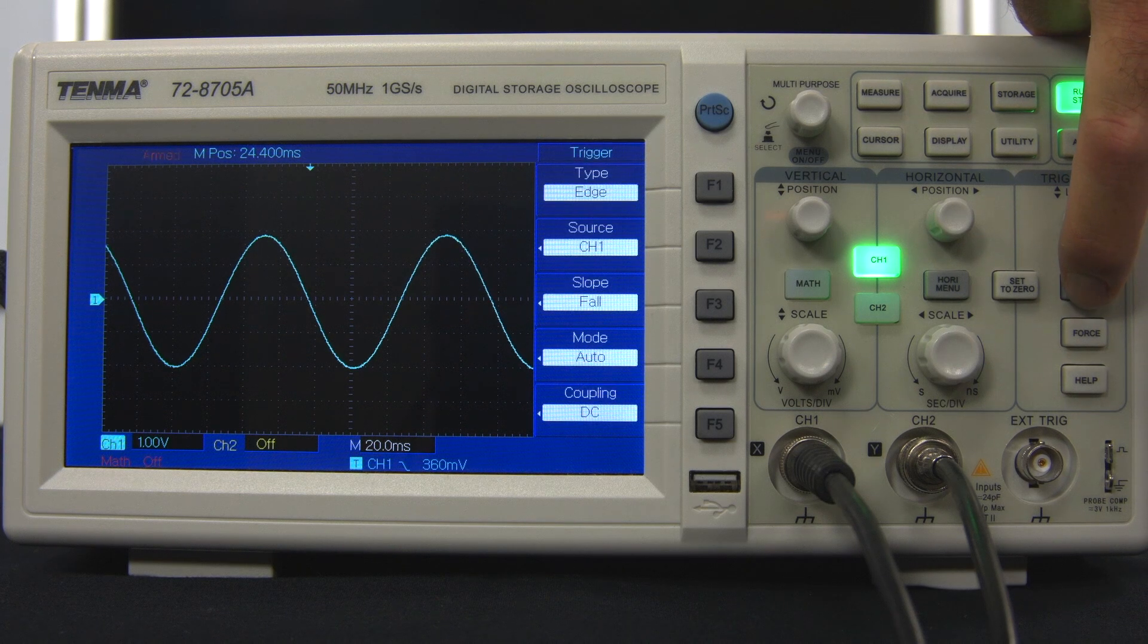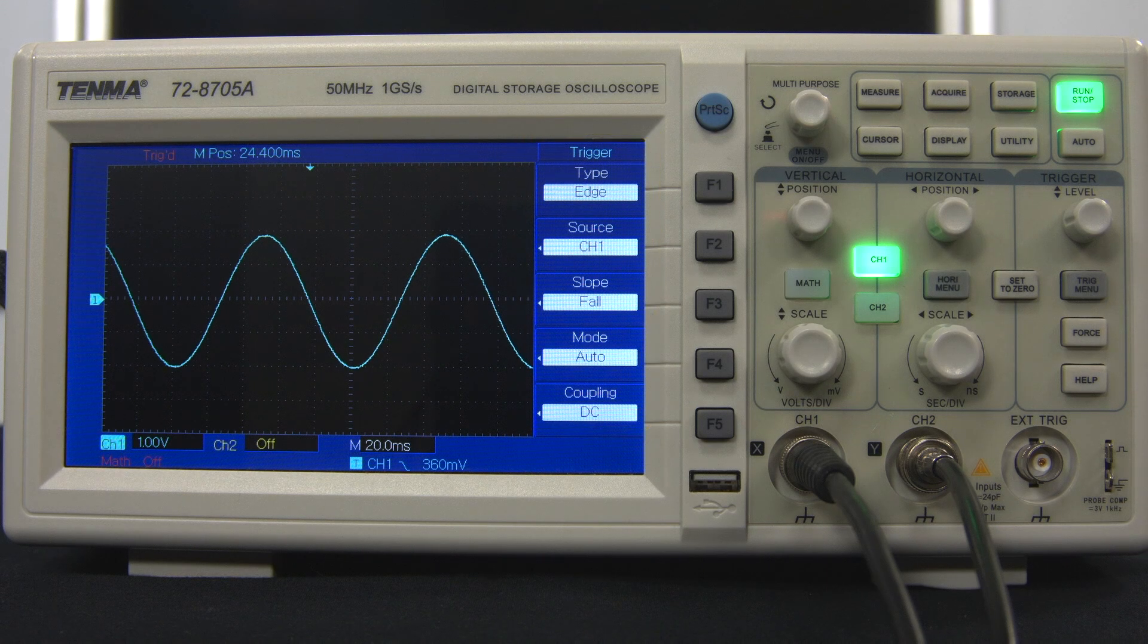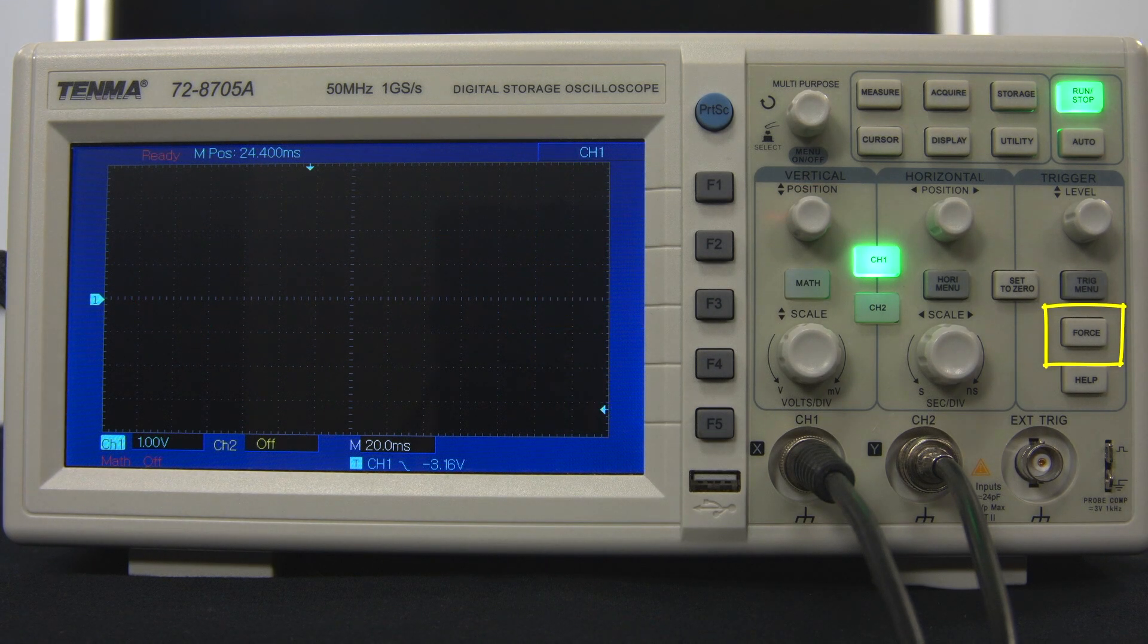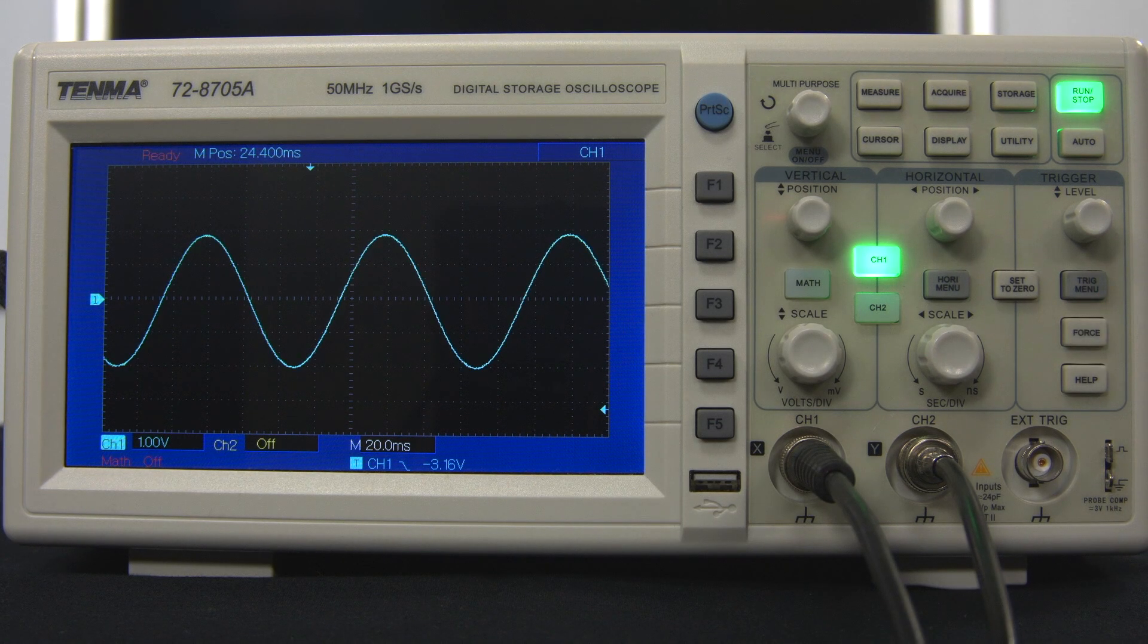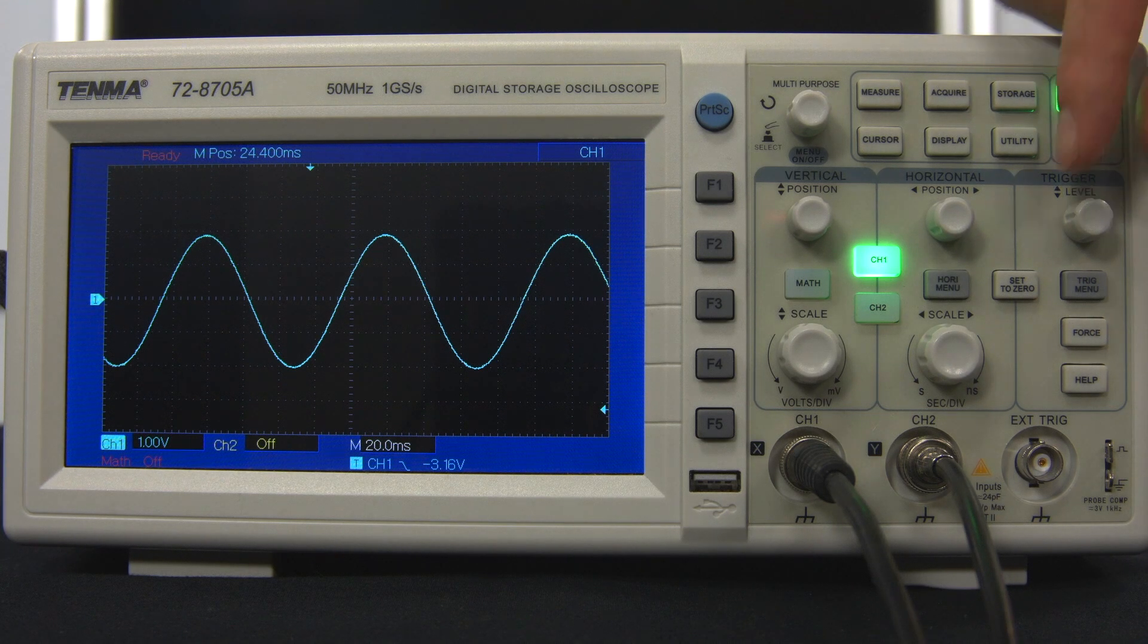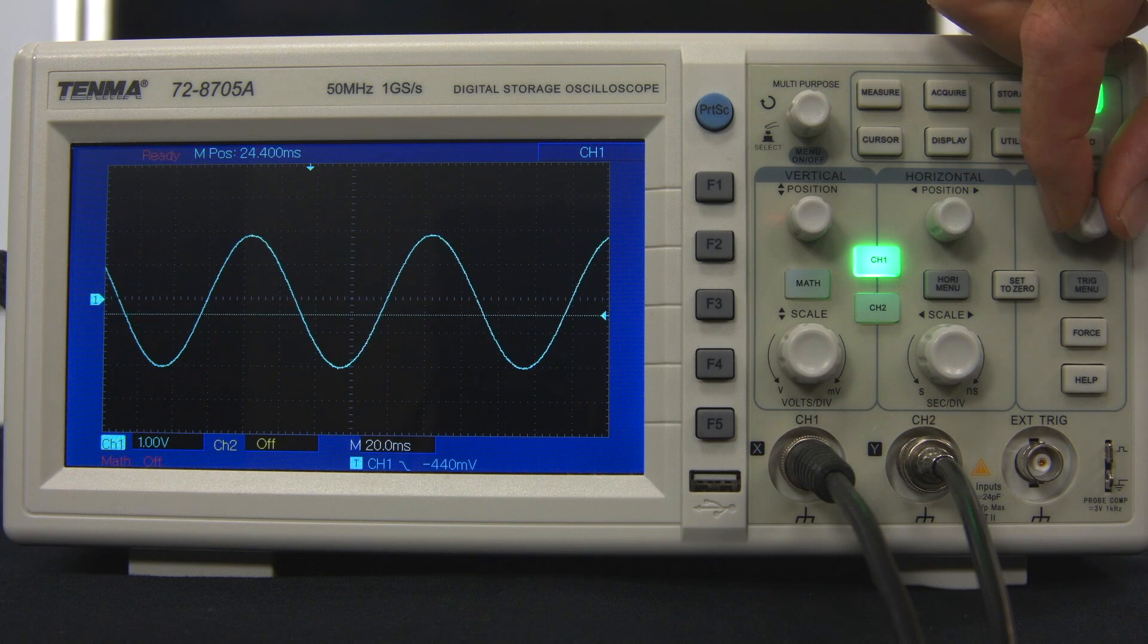Pushing the trigger menu button brings up some options that relate to the trigger, and works in much the same way as the channel menu. A button that can be very useful if you are having trouble getting the triggering to work properly, is the force trigger. In some cases, an untriggered oscilloscope shows no signal at all, so it is hard to know whether you should increase or decrease the trigger level, or by how much. Pushing the force button in the trigger control forces the oscilloscope to display the signal once, allowing you to see where the trigger should be set. In this case, the trigger level was too low, so if we adjust it upward, we can once again have a stable triggered display.